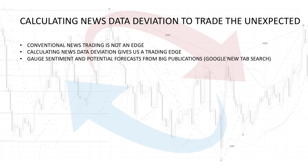Calculating news data deviation to trade the unexpected. Conventional news trading is not an edge. What I mean by conventional news trading is if you're buying when there's positive news and selling when there's negative news — that is not an edge. That's what I would call conventional news trading.